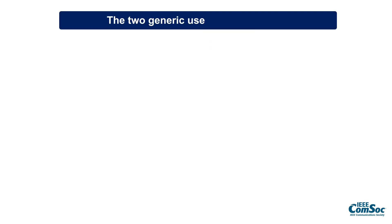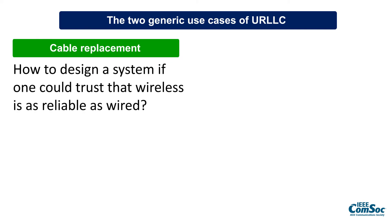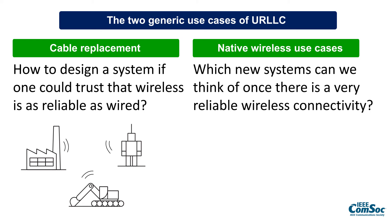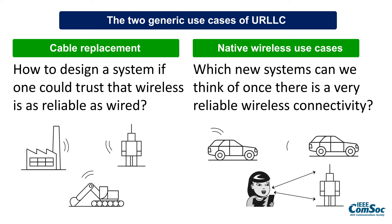There are two generic use cases of URLLC. The first one is cable replacement, where we look into an existing system that uses wired connections and ask what are the benefits and design principles to replace those wired connections with wireless. For the native wireless use cases, we look into completely new systems that can emerge by making use of wireless connectivity, such as connected vehicles or humans that control robots in real-time.